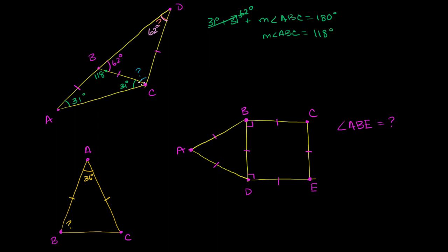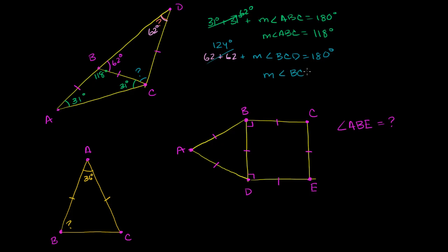Finally, to figure out this blue angle: the blue angle plus these two 62-degree angles have to add up to 180 degrees. So 62 plus 62 plus the measure of angle BCD equals 180 degrees. 62 plus 62 is 124; subtract 124 from both sides, and the measure of angle BCD equals 180 minus 124, which is 56 degrees. And we're done.